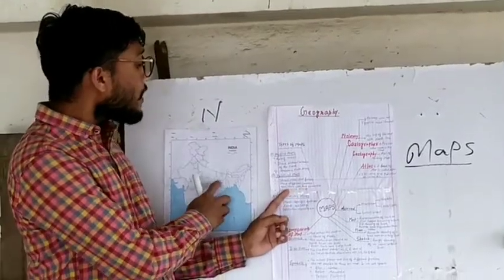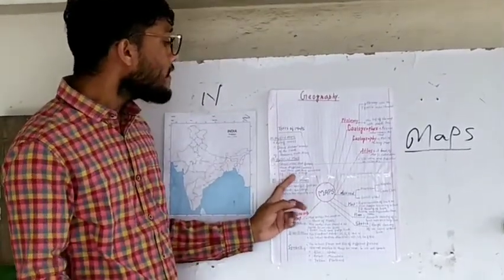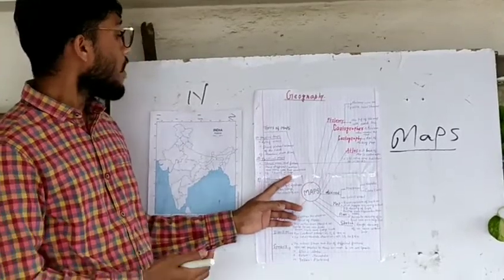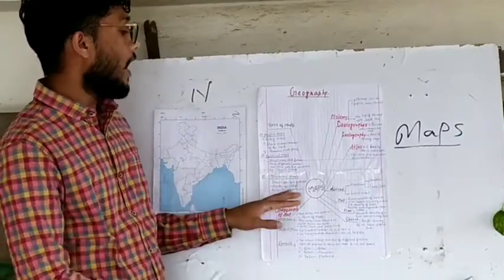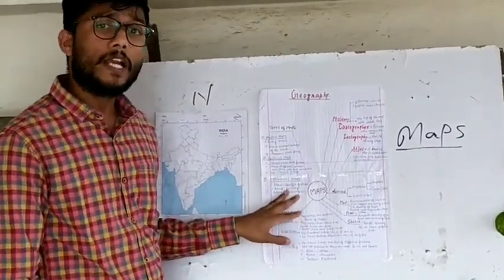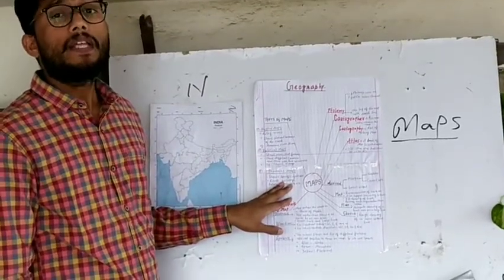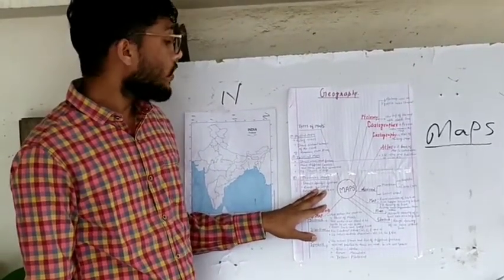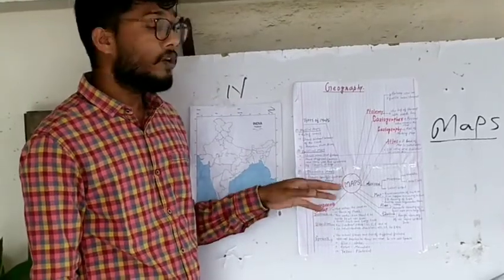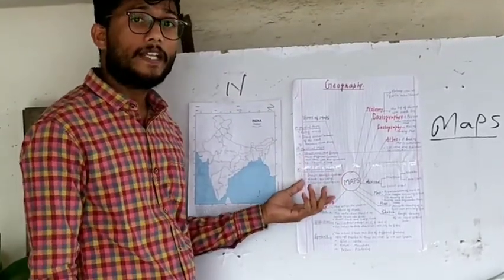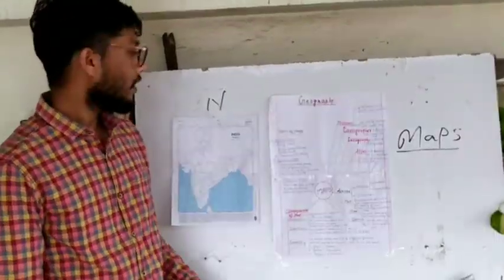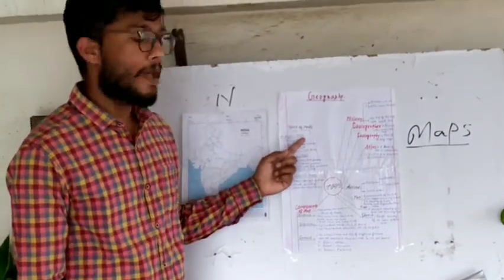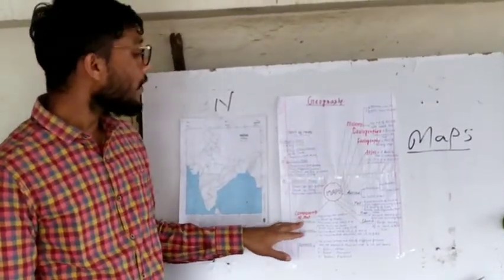On a political map of India, we can easily locate towns, villages, and cities. The third type is the thematic map, which is a map based on a specific theme — for example, roads, buildings, population density, etc. Now we will look at the components of a map.